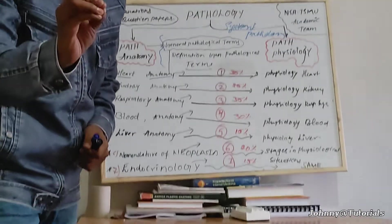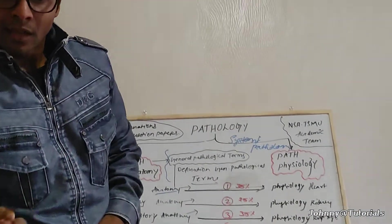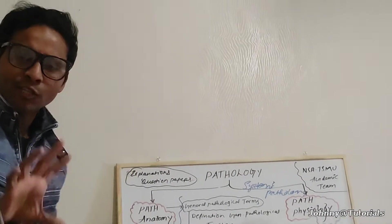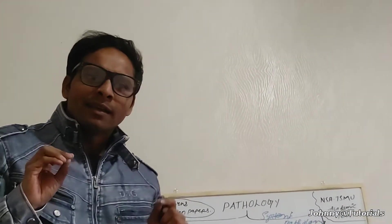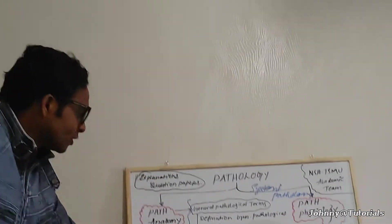For respiratory pathology, in path anatomy or path physiology you will find questions related to respiration — like COPD (chronic obstruction of pulmonary diseases), acute and chronic bronchitis, asthma, emphysema, pneumonia, and so on.